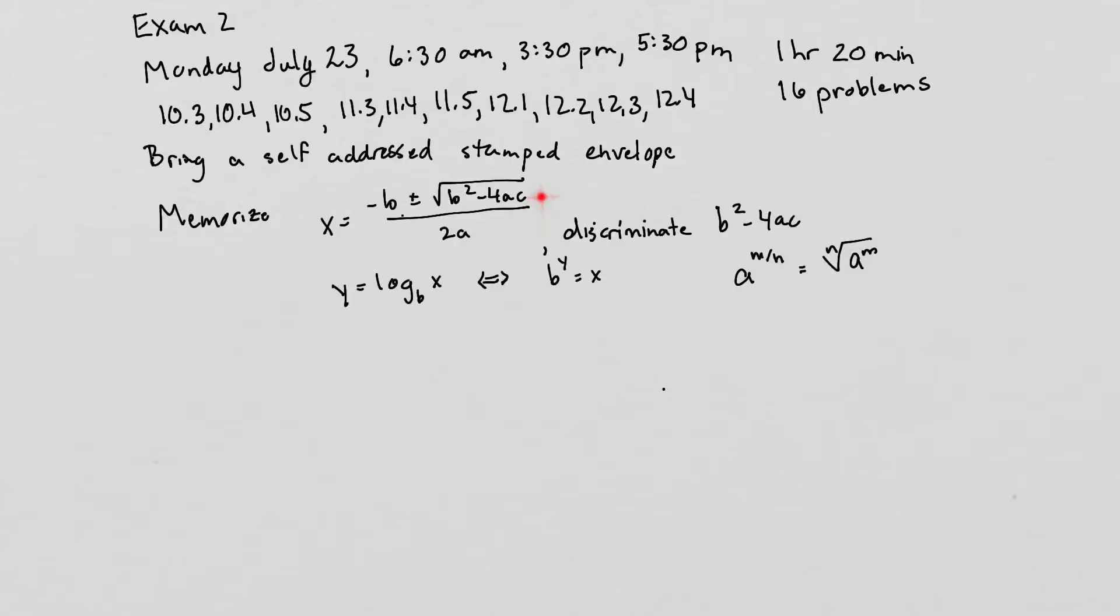So there's the quadratic formula. And in the quadratic formula, you'll need to know the discriminant part. So that's the b squared minus 4ac. You'll also need to be able to convert a logarithm to an exponential equation or an exponential equation to a logarithmic equation. So you need to know where these go.